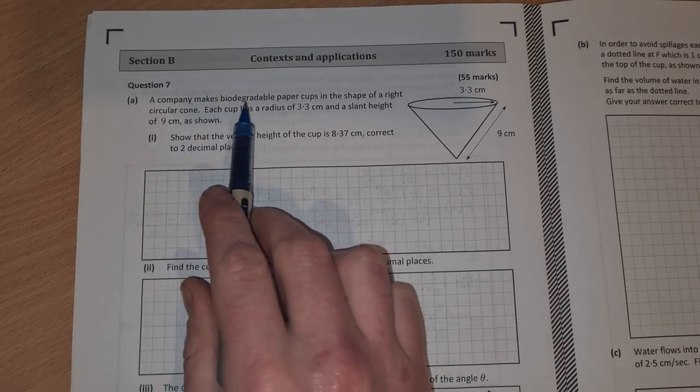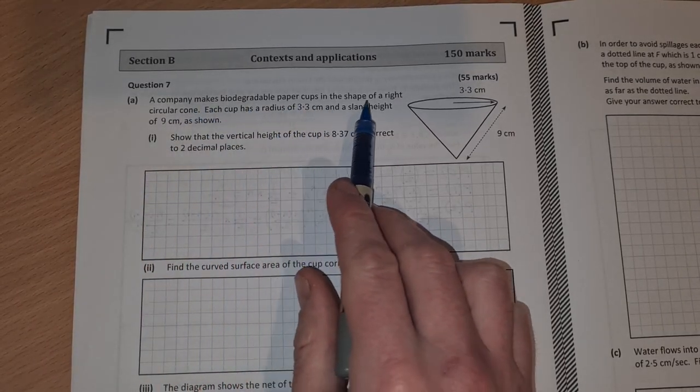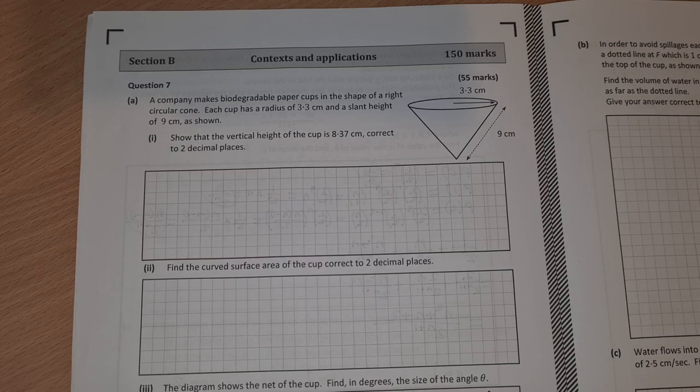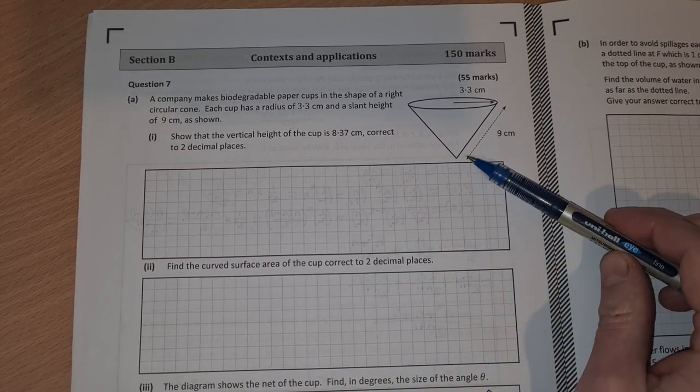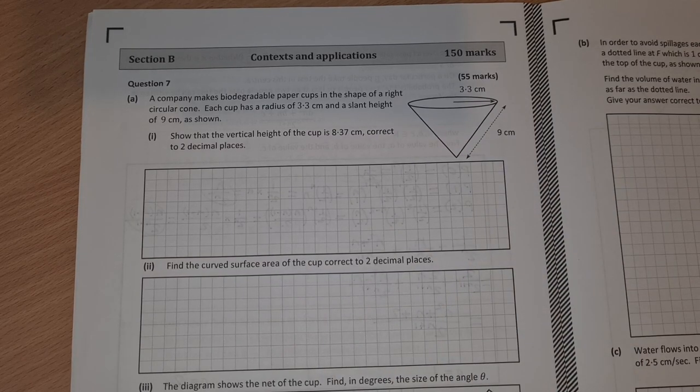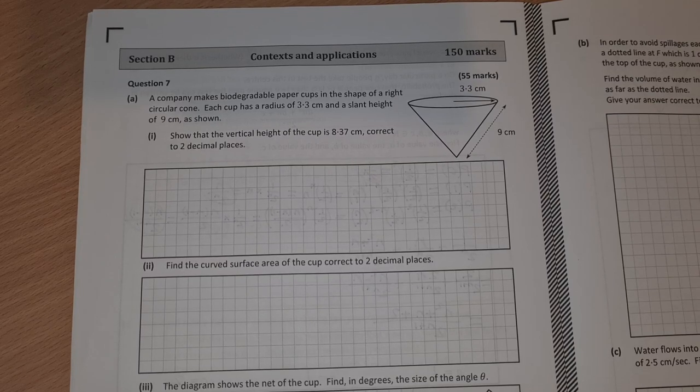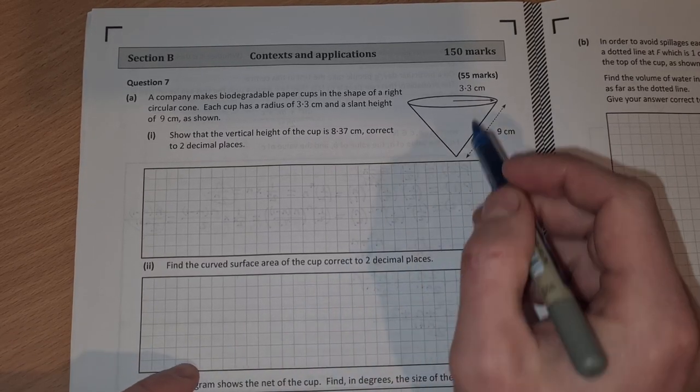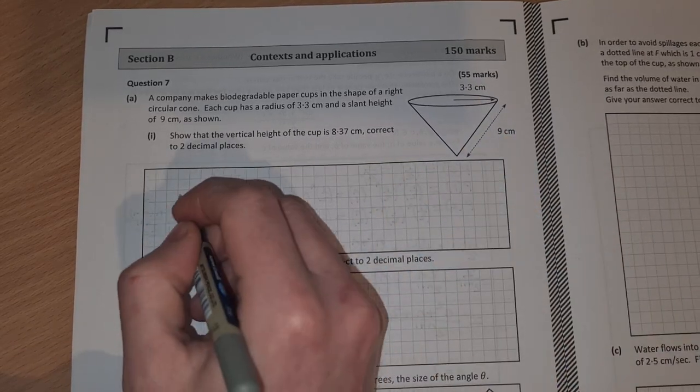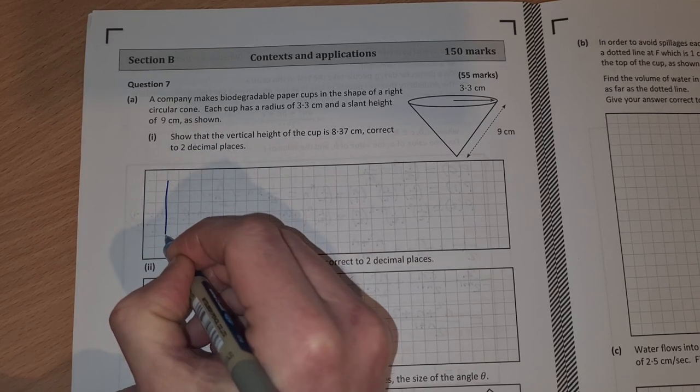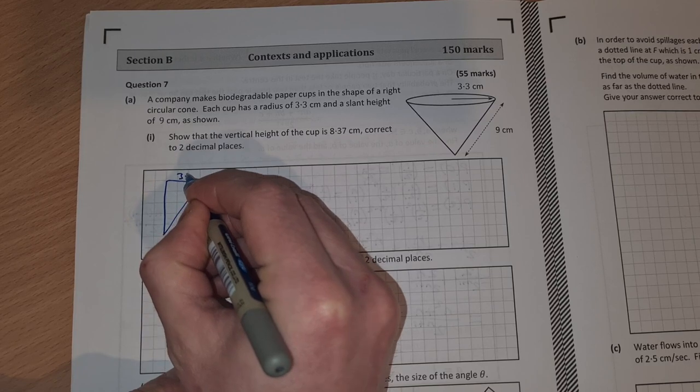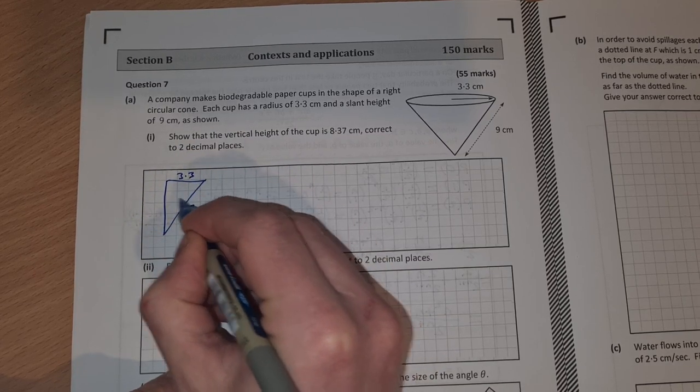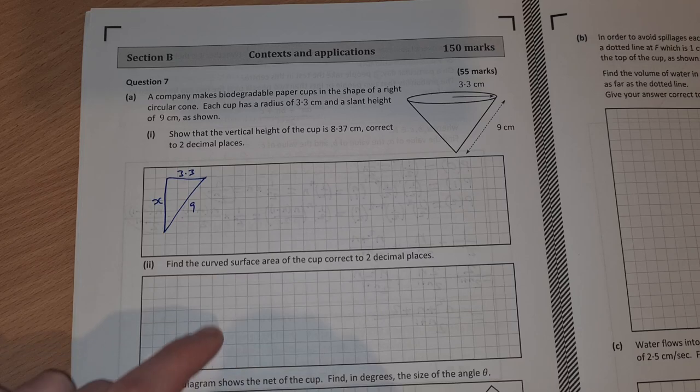Part A. A company makes biodegradable paper cups in the shape of a right circular cone. Each cup has a radius of 3.3 centimeters and a slant height of 9 centimeters. Let's show that the vertical height of the cup is 8.37 correct to two decimal places. We need to find this height here. That's going to be a right angle triangle where we have 3.3 and we have 9. We want to find this value x.